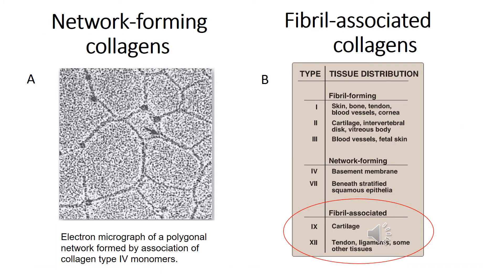The network-forming collagens are types 4 and 7, which form a three-dimensional mesh, as you can see in figure A. Rather than distinct fibrils, type 4 molecules assemble into a sheet or meshwork that constitutes a major part of the basement membranes. Fibril-associated collagens are types 9 and 12. They bind to the surface of collagen fibrils, linking these fibrils to one another and to other components in the extracellular matrix.